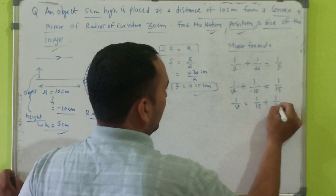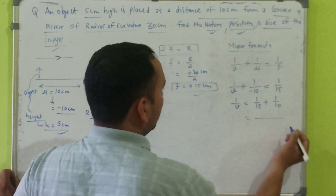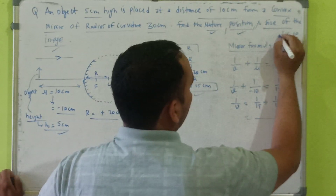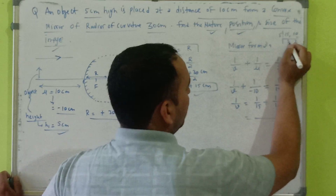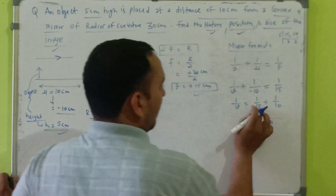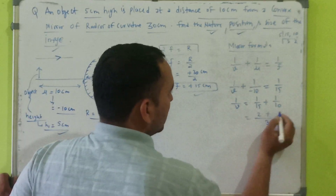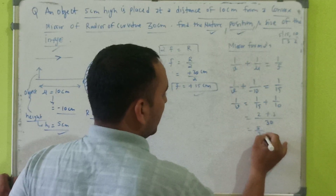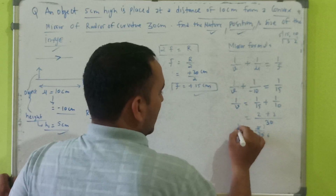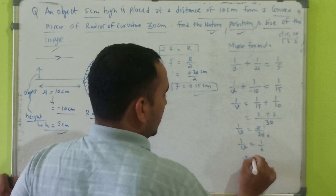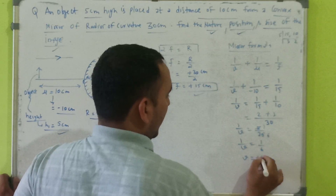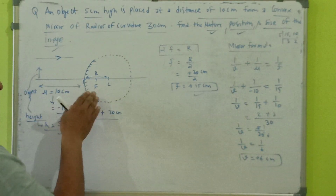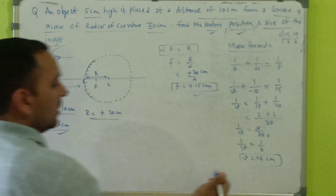Taking the LCM of 15 and 10, which is 30, we get: 1/v equals 2/30 plus 3/30, which gives 5/30, simplifying to 1/6. Therefore, v equals plus 6 centimeters. The positive value of v indicates that the image distance is behind the mirror, meaning the image is formed behind the mirror.